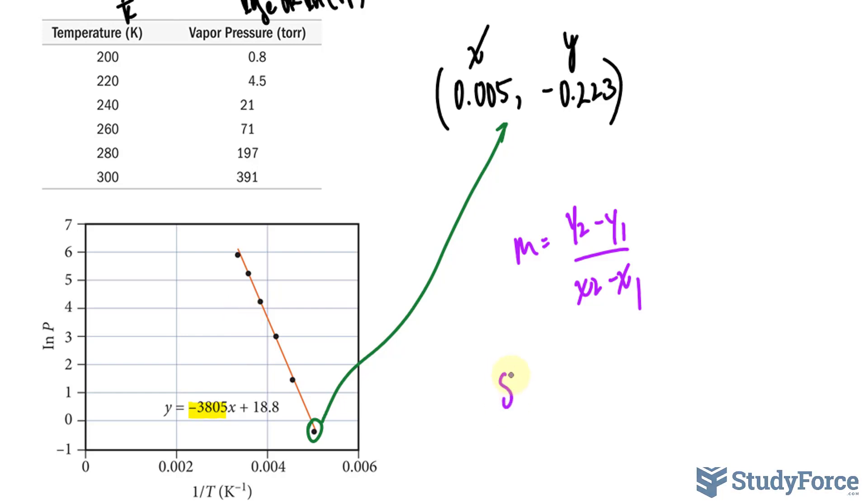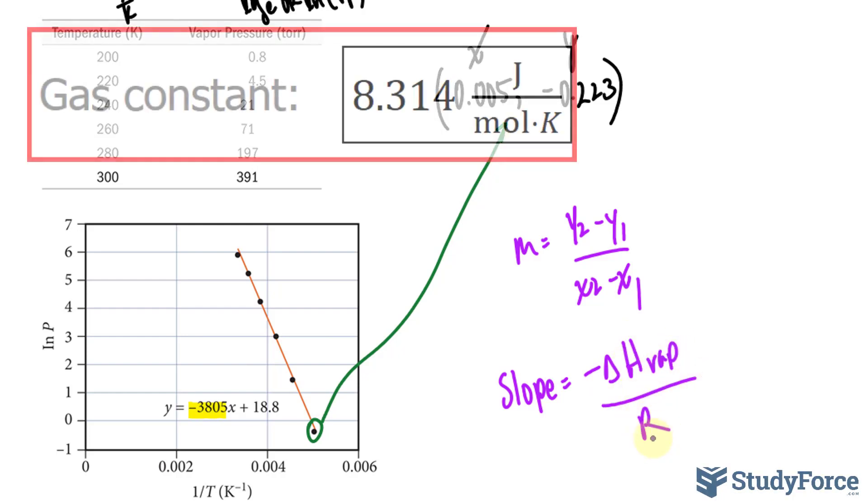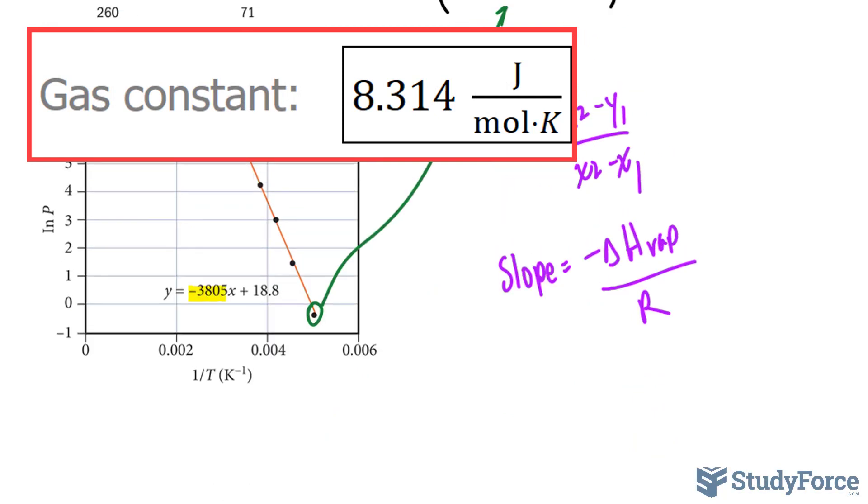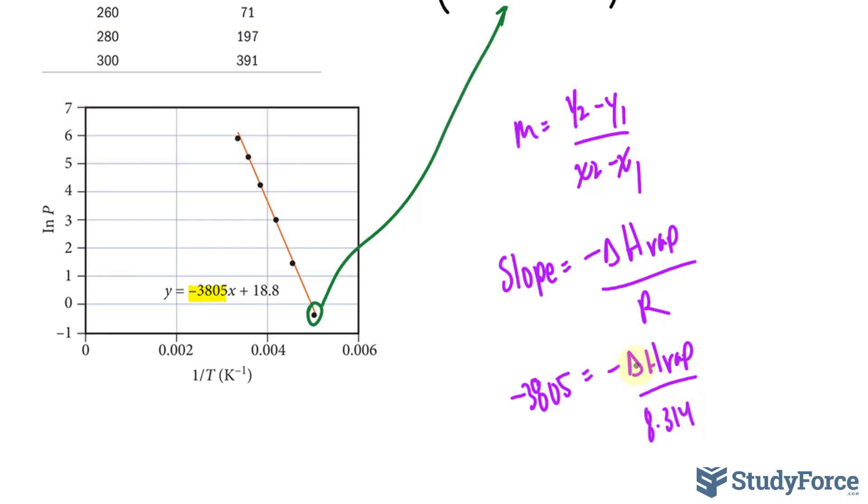Here's what I mean. Slope is equal to negative ΔHvap over R, which is a gas constant. The slope that we found was negative 3805 is equal to negative ΔHvap over 8.314 joules per mole times Kelvin.